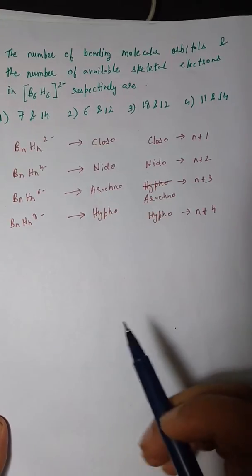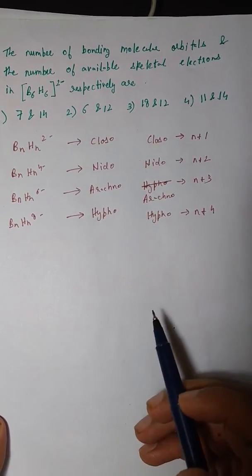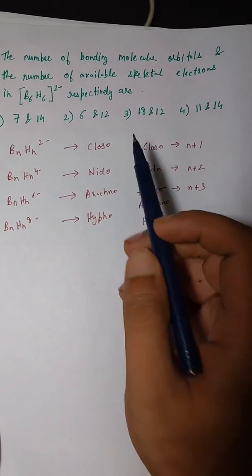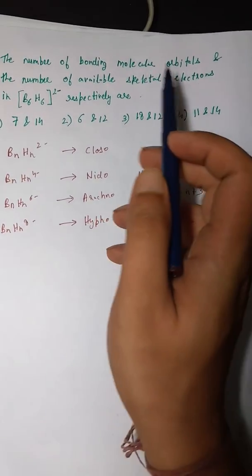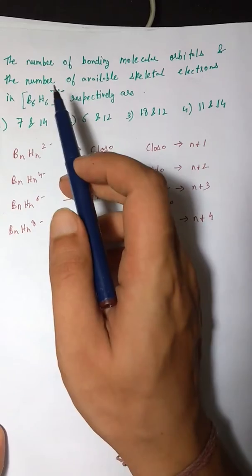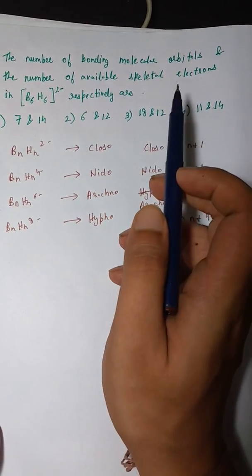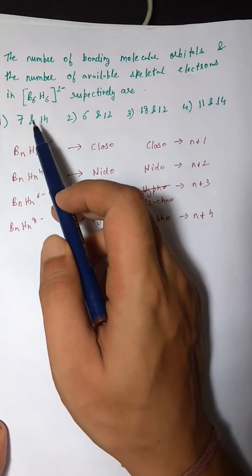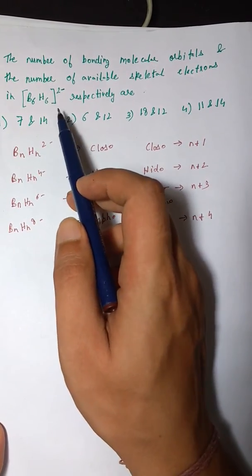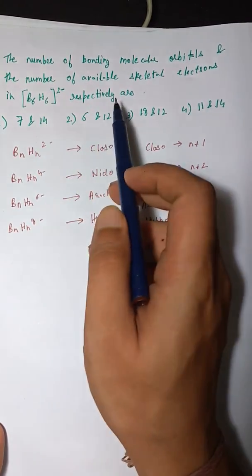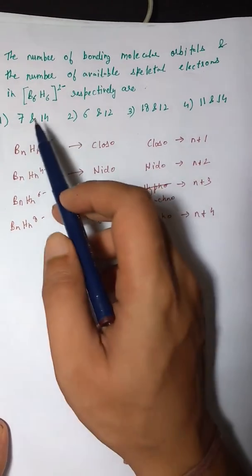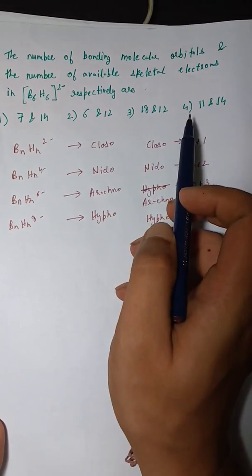The question says: find the number of bonding molecular orbitals and the number of available skeletal electrons in B6H6 2−, respectively. Four options are given.